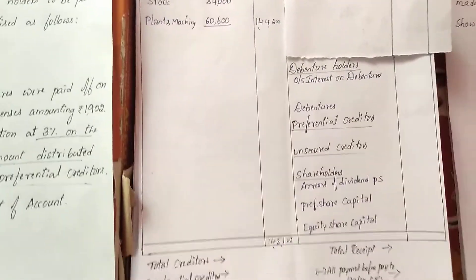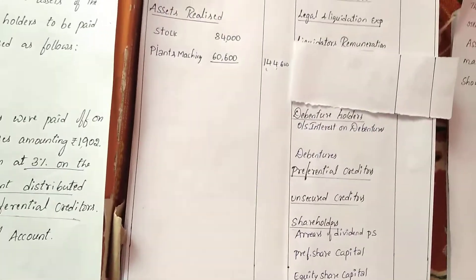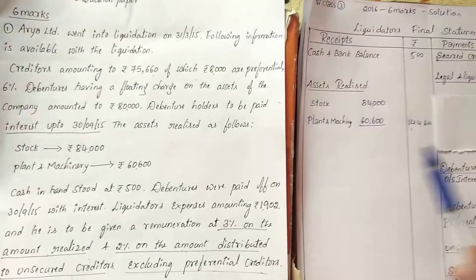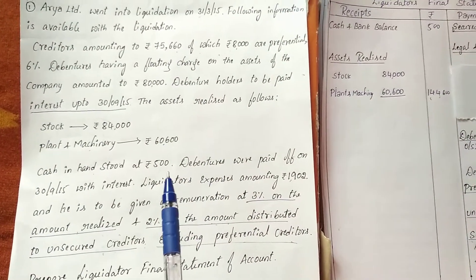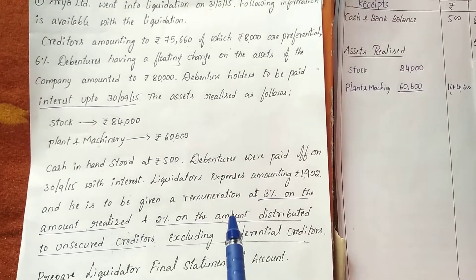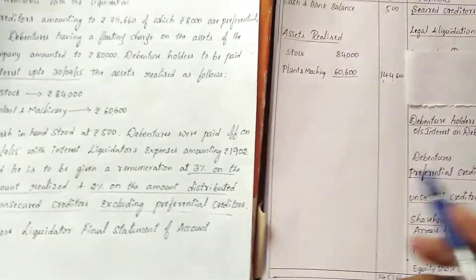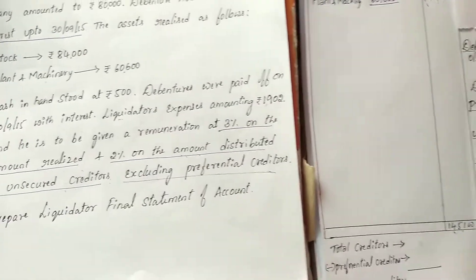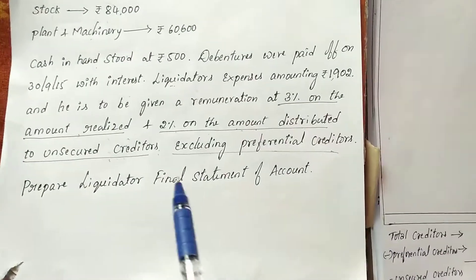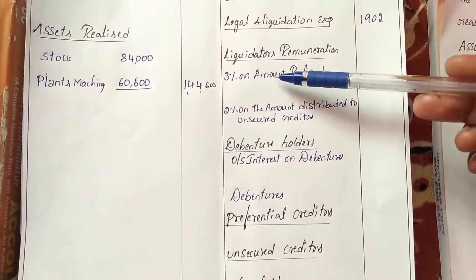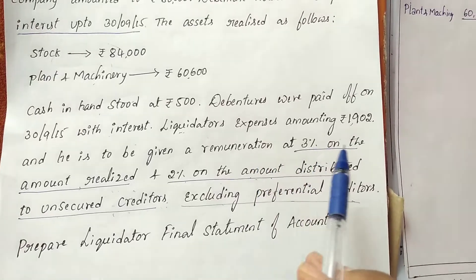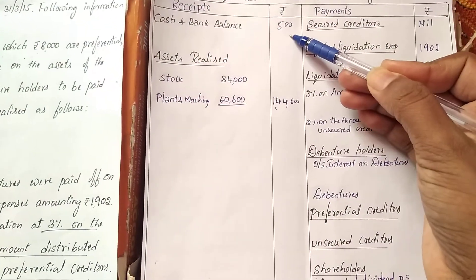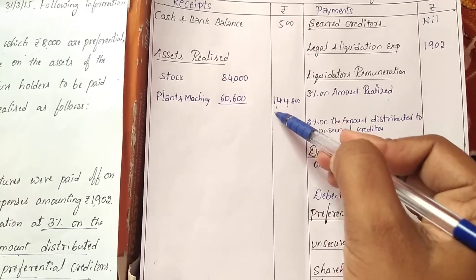On the payment side, first pay liquidation expenses of rupees 1,902. Next, remuneration: point one is remuneration at 3% on the amount realized. Amount realized means only the asset realized, which is 1,44,600 — cash is not included. So remuneration on asset realized only.